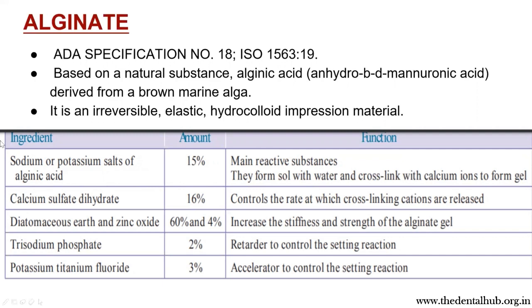Calcium sulfate dihydrate at 16% controls the rate at which cross-linking cations are released. Diatomaceous earth increases the strength and stiffness. Trisodium phosphate at 2% is the retarder. Potassium titanium fluoride is the accelerator.